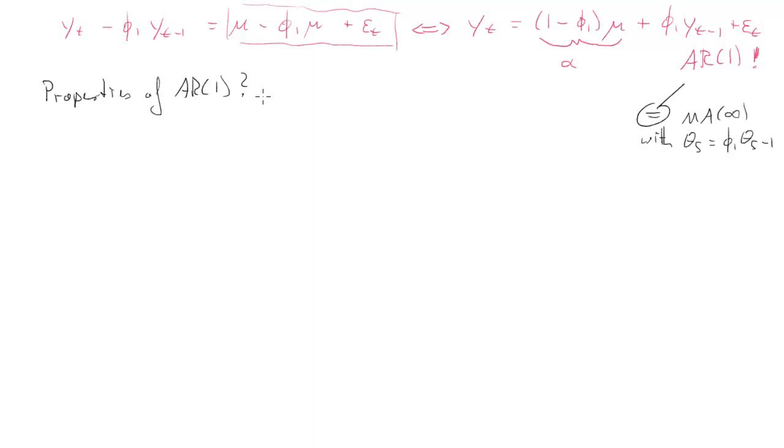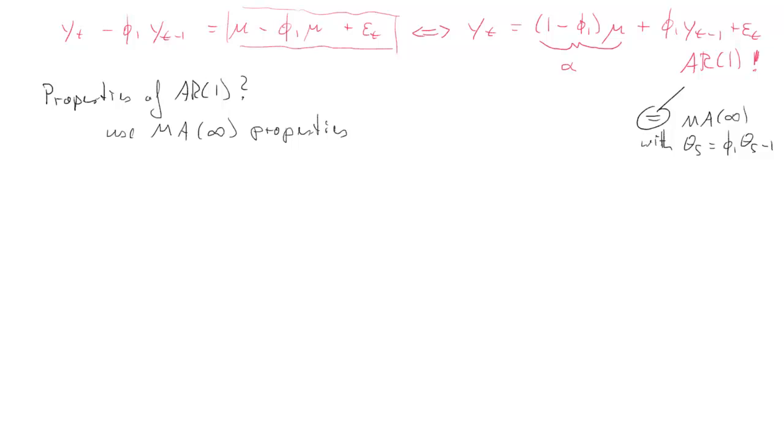Keeping this in mind, what are the properties of this AR1 process? Well, what we can do is we can actually use the fact that we know it is an MA infinity process. And we use the properties of the MA infinity process. Here they are. The expected value is equal to mu. From this little relationship here, we can see that mu is just exactly the same as alpha divided by 1 minus phi 1.